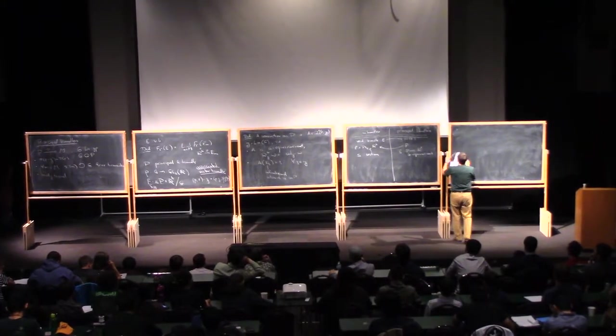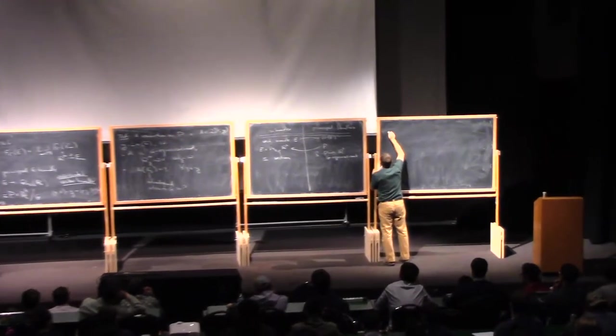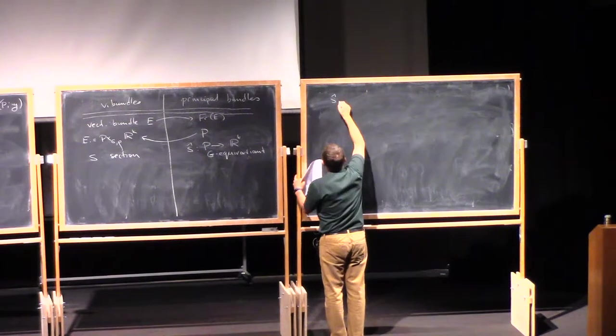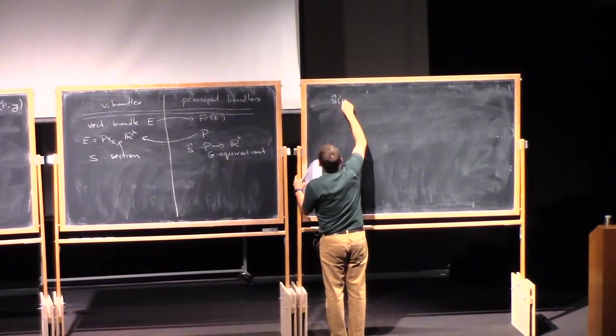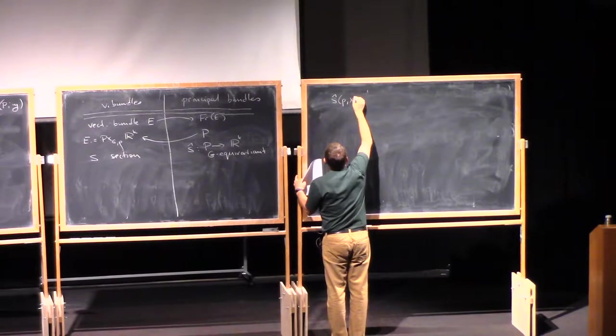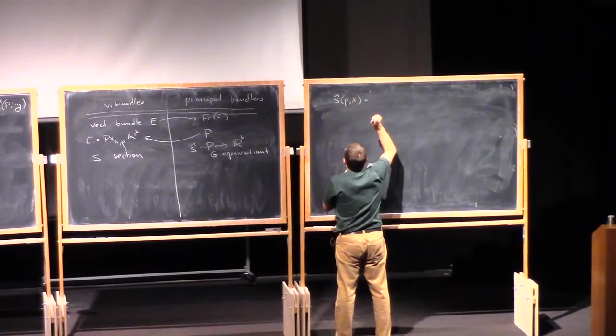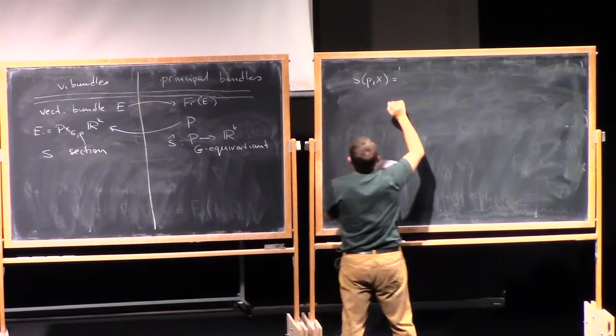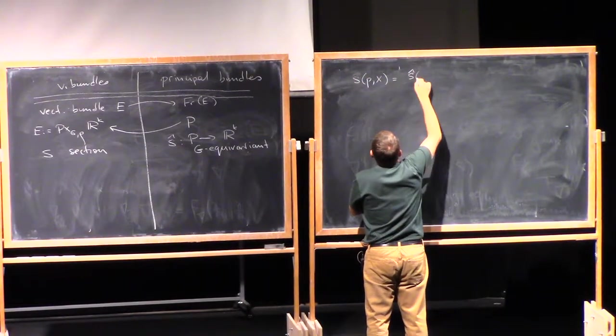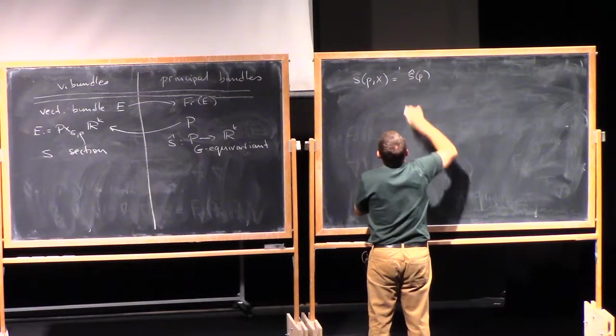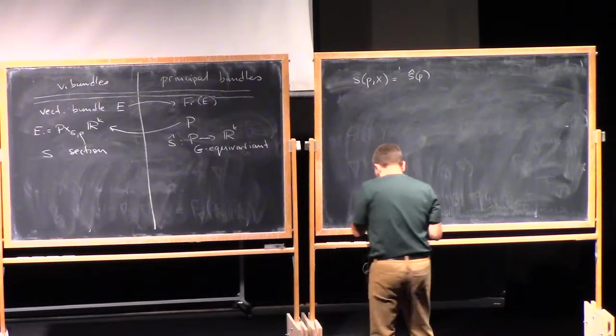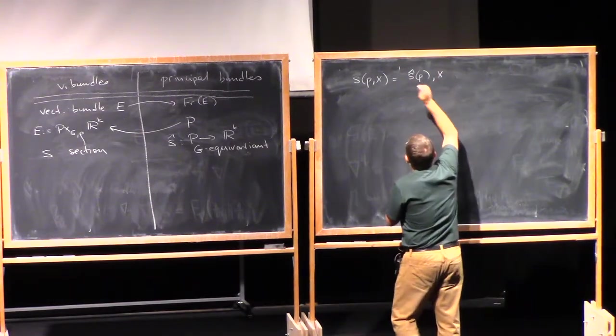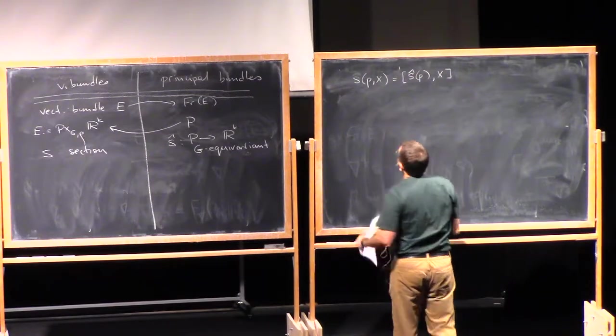This is very explicit. If you have a G-equivariant map s hat, then you can define s of px to be s hat of p. The class is this guy.